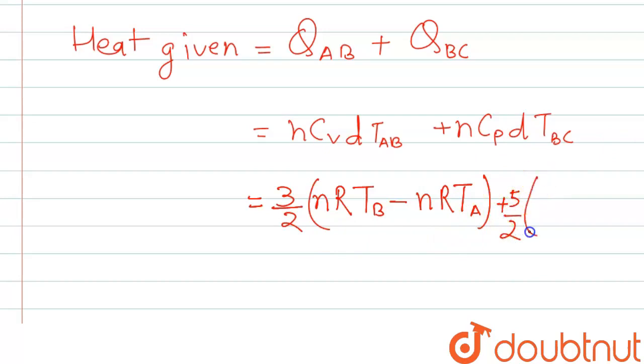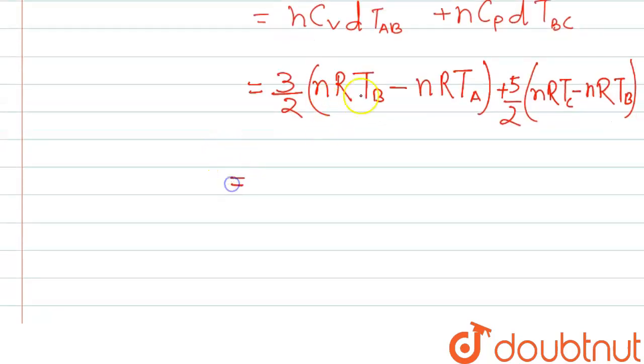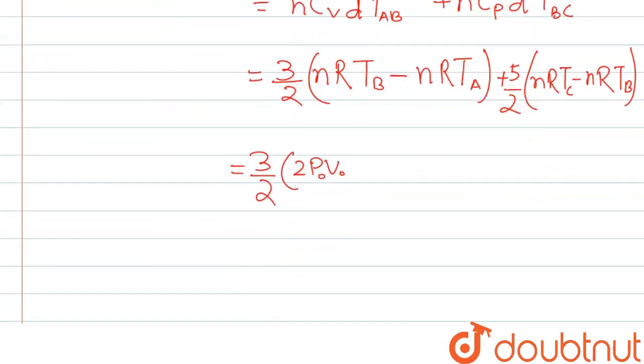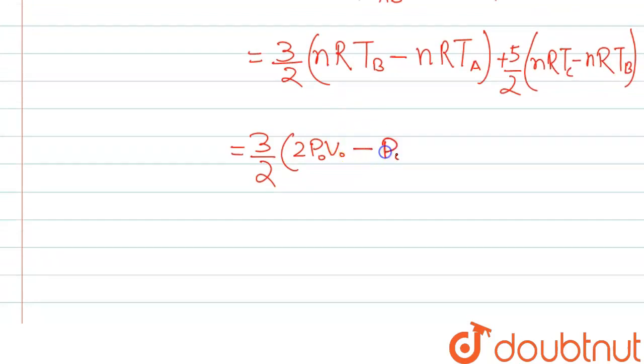5/2 nR(T_C - T_B). Further we can write in terms of P_B: 3/2 into 2P₀V₀. The value of pressure here is 2P₀ from A to B, and this one will be minus P₀V₀ at A.